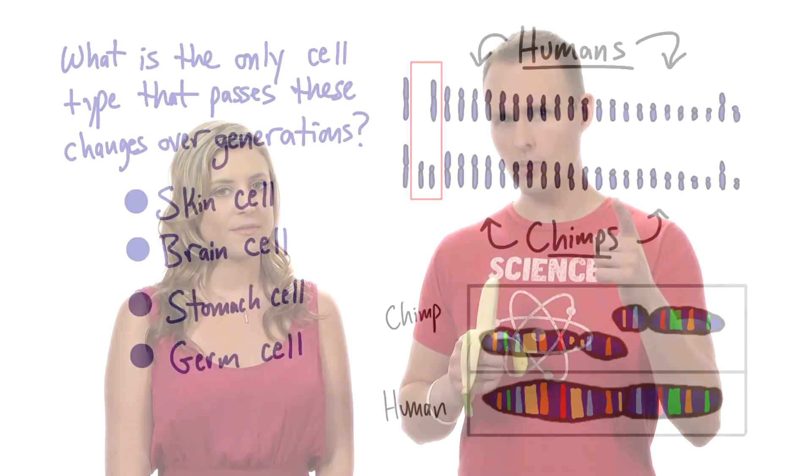It seems so crazy that that could happen and get passed down. Well, remember, it has to happen in the right cell type. So you tell me, what's the right cell type that matters most in passing DNA on to the next generation?